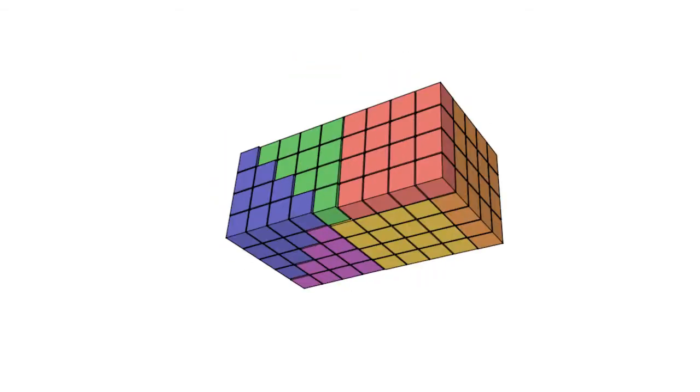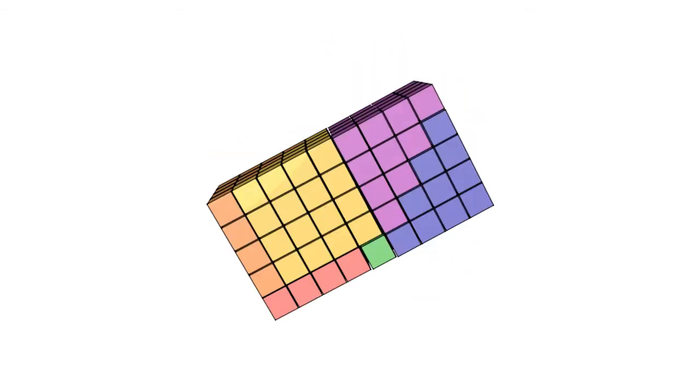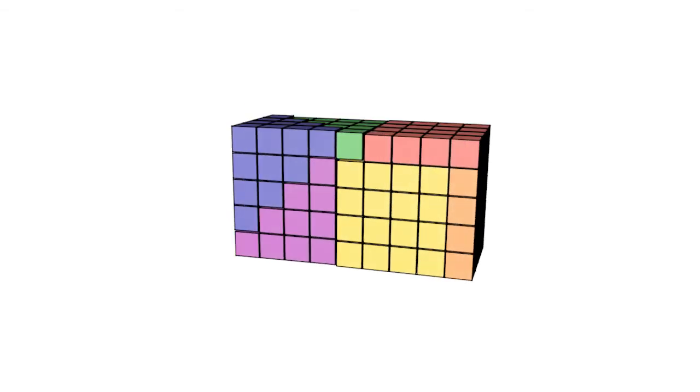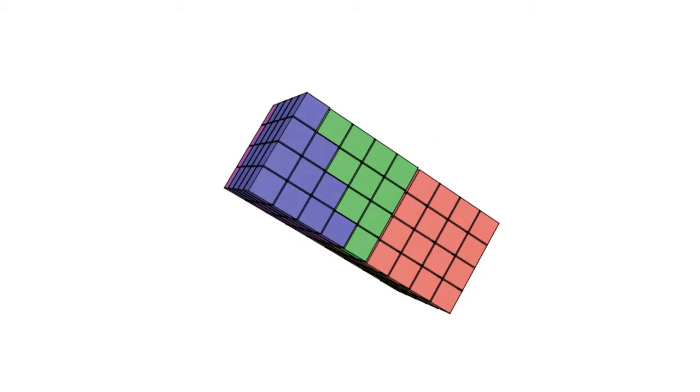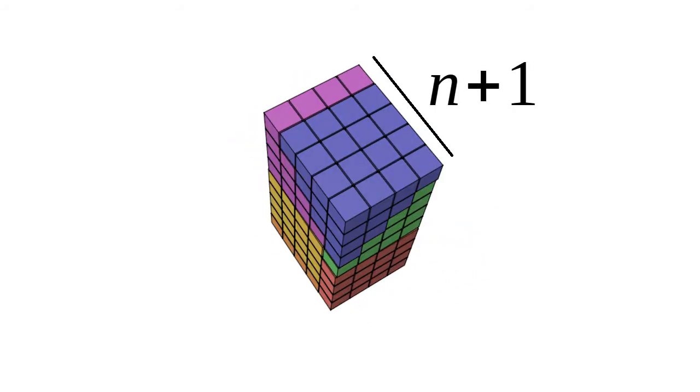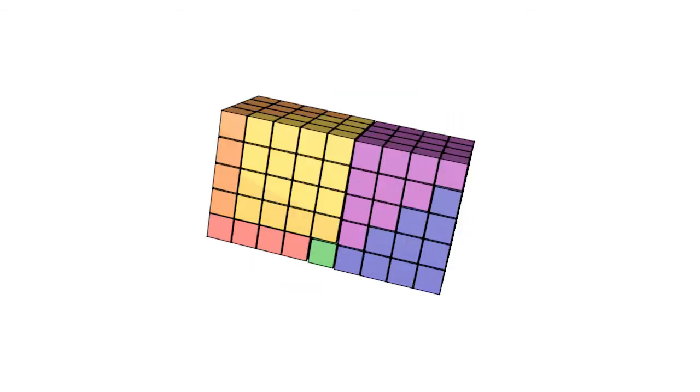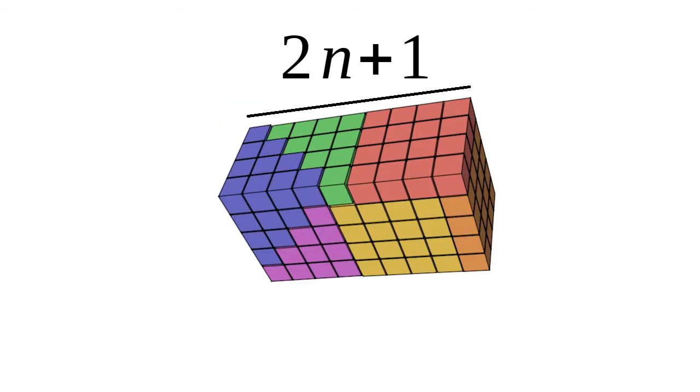To find the total volume of this prism, we can find the three dimensions: n, n plus one, and two n plus one.